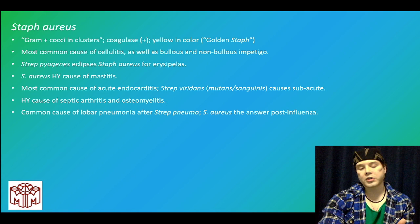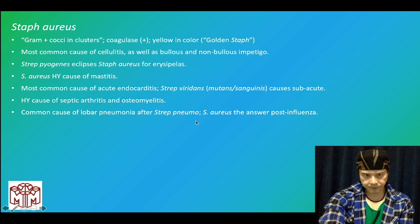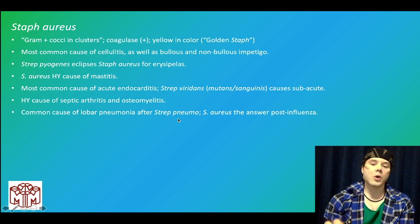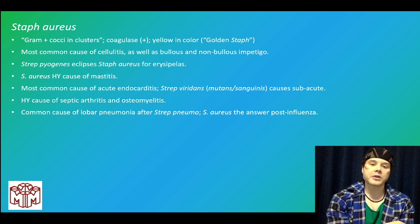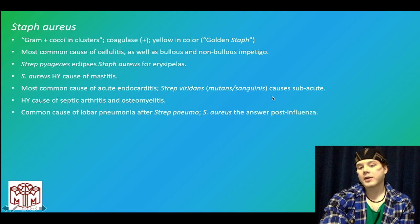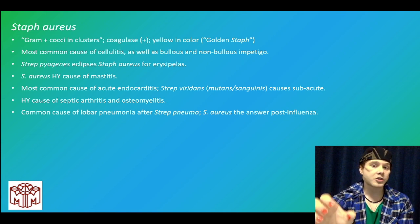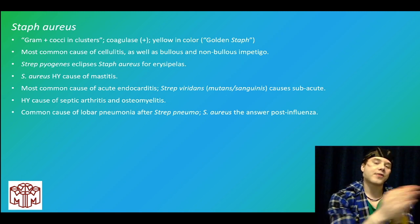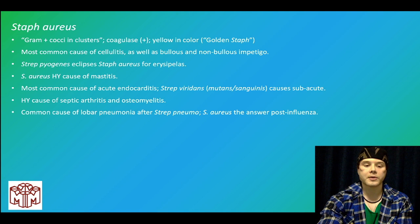Strep pneumo is an important cause of lobar pneumonia. If you get a question with right lower lobe infiltrates, dullness to percussion, fever 102, and strep pneumo isn't listed — staph aureus can be the answer, as it can also cause lobar pneumonia. Staph aureus is also the answer post-influenza: if someone just recovered from a viral infection with fever, chills, and myalgias (think influenza) and then develops bacterial pneumonia, that's staph aureus — USMLE really likes that.